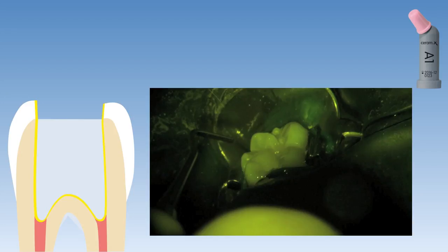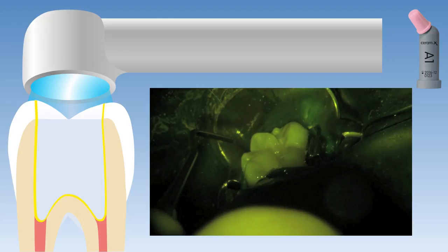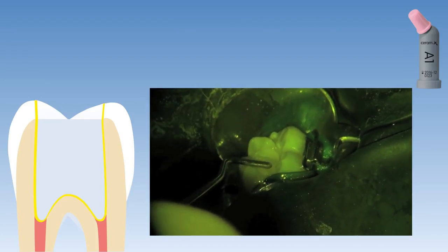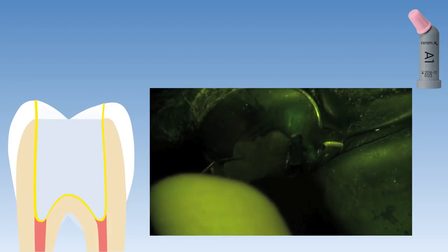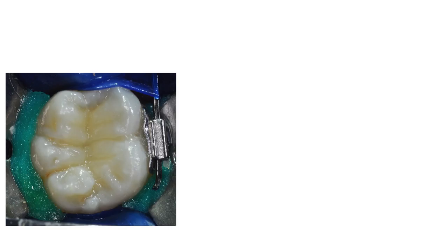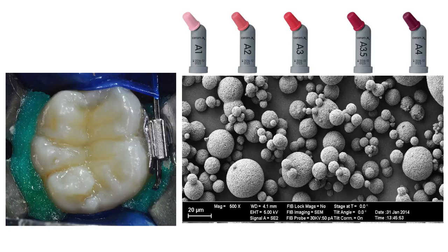The last step for restoration of this access cavity is to cover the SDR material with a normal regular viscosity composite resin. The SDR material was capped by applying Ceram.x Spectra ST composite resin, shade A1, using the successive cusp build-up technique. The new Ceram.x Spectra ST material contains primary glass fillers with a mean size of 0.6 microns to create granulates with a mean size of 15 microns. These granulates are produced in a spray drying process resulting in nicely rounded spheres — this innovative filler technology, Spectra ST, improves the mechanical strength and handling properties of this material.